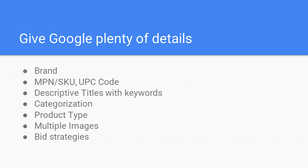For e-commerce, the most important piece of the puzzle is the product information. The data feed you submit to Google Merchant Center will have the largest impact on your Performance Max campaign performance. Make sure you're submitting as much info as possible, including brand, MPN and SKUs, UPC codes, descriptive titles with keyword optimization, Google taxonomy and categorization, your product type, multiple images, ideally a video or two, custom labels, bid strategies, and anything else that gives Google the full context of what your product is and what your unique value propositions are. This will provide the best chance for your Performance Max campaign to deliver the highest amount of value.